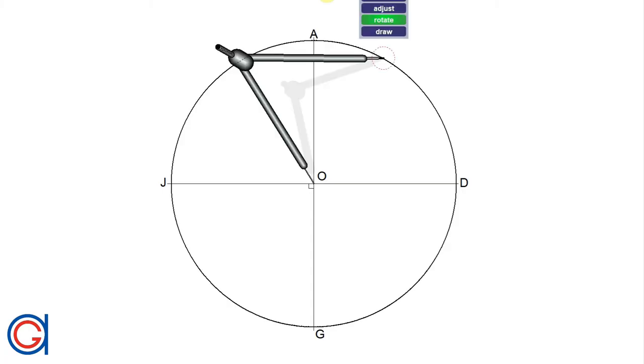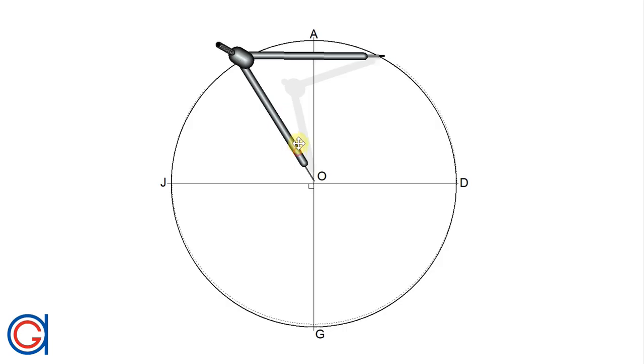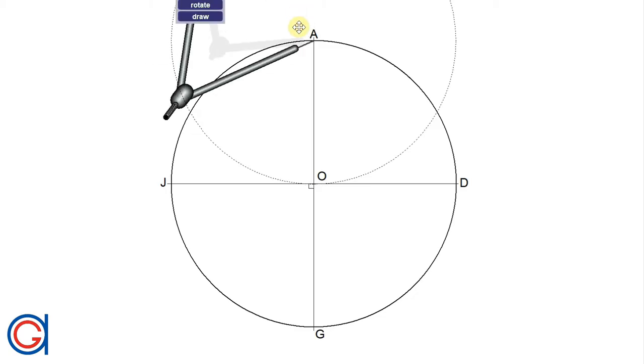So the next step, setting our compass to the length of the radius of the circle, we are going to draw four semicircles using the extremities of the diameters as centers.